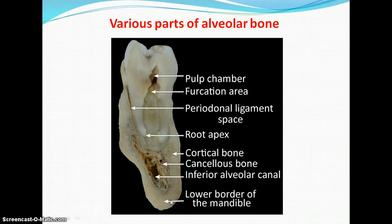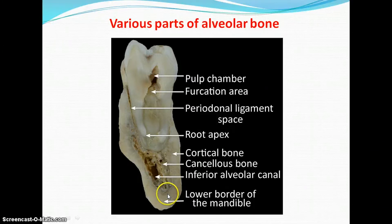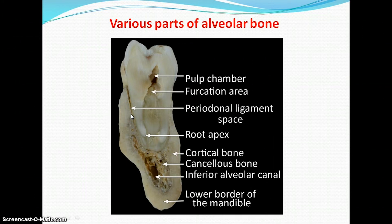The alveolar bone is made up of two distinguishable parts: the alveolar bone proper and the supporting alveolar bone. The alveolar bone proper is made up of a thin lamella of bone which surrounds the root. When seen on a radiograph, the alveolar bone proper appears as a radiopaque line known as the lamina dura. The principal collagen fibers from the periodontal ligament are inserted into this bone, so the alveolar bone proper is also known as bundle bone. It is perforated by many openings providing passage to blood vessels, lymphatics, and nerves, and is therefore also known as the cribriform plate.